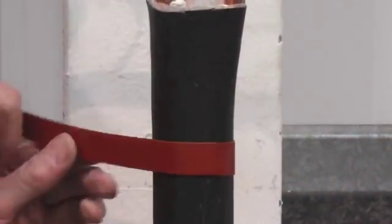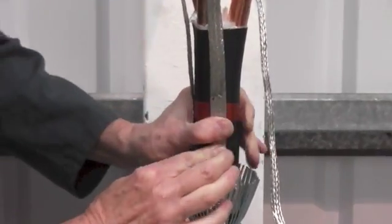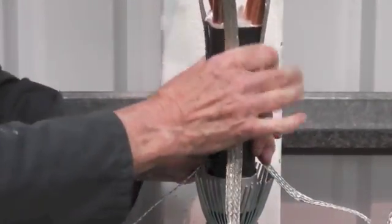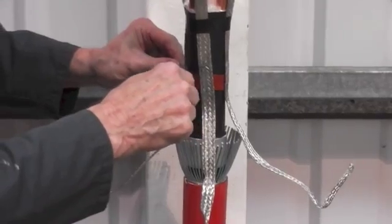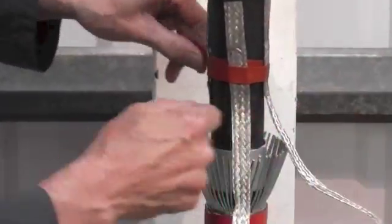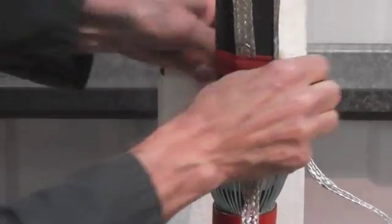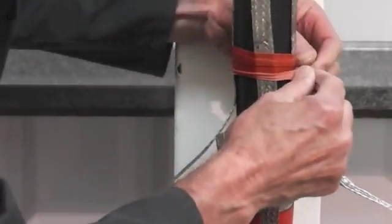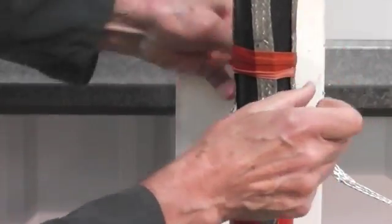Now wrap some red mastic tape around the outer cable jacket and position the earth braids with the solder blocks sitting on top of the mastic tape. Apply some further mastic tape over the top of the solder block, and this will stop the capillary action of water rising up the braids into the earth pond area.